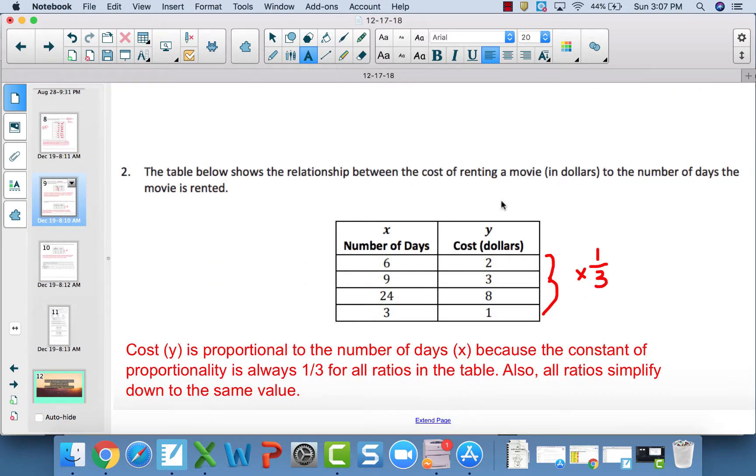Number 2 is proportional. The constant of proportionality here happens to be 1 third. And what that means is you divide x by 3 to get y. It doesn't matter here that the order doesn't continually increase - it goes 6, 9, then 24, then 3. All you're looking at is the individual comparisons. And in this case, y is always 1 third of x. Table 2 is proportional because it's always divided by 3 or times 1 third to get from x to y.